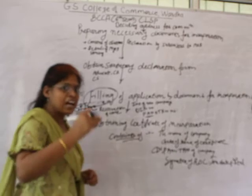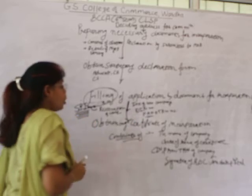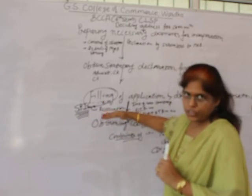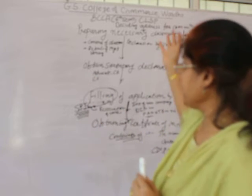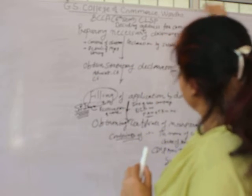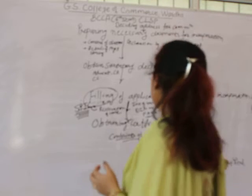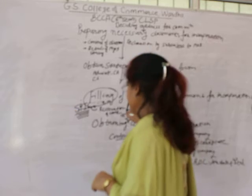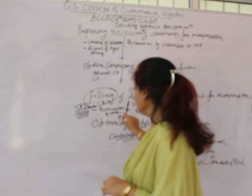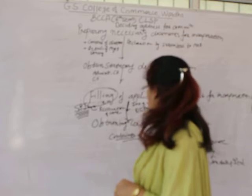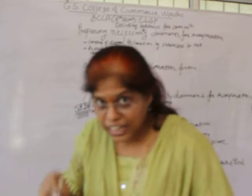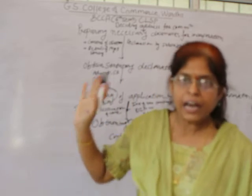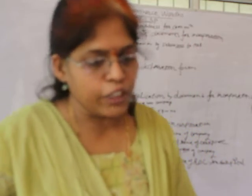The last stage is obtaining a Certificate of Incorporation. Once all formalities are completed — the stages discussed yesterday and today, including preparing necessary documents, deciding address for communication, obtaining statutory declaration forms, filing application and documents with ROC using the SPICE form — the promoters obtain the Certificate of Incorporation from the ROC. It is up to the promoters to go to the ROC office and request this certificate.